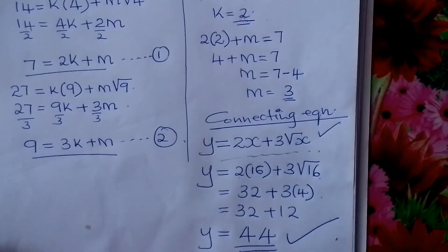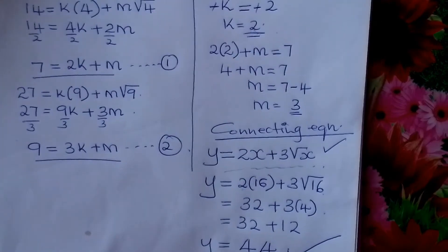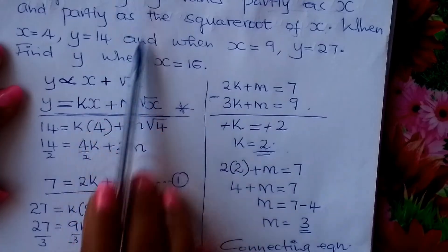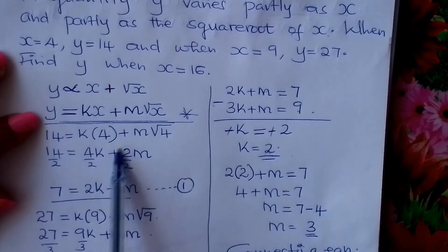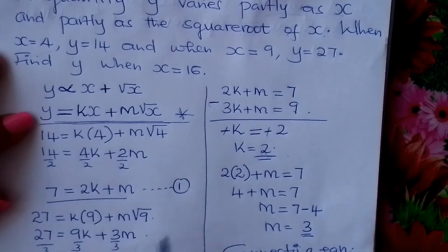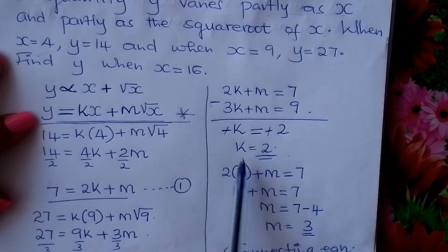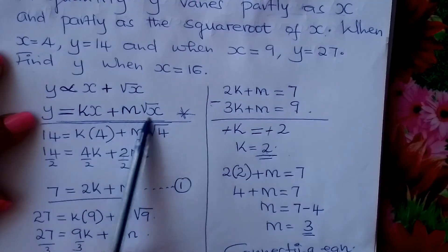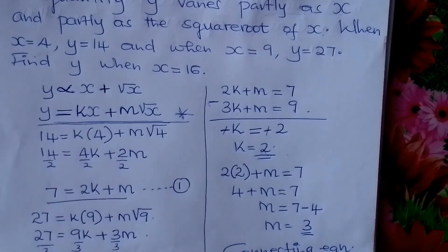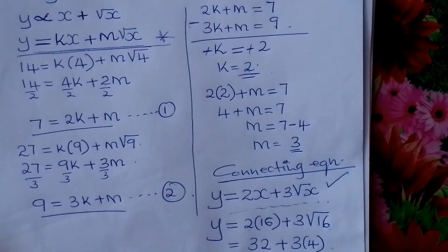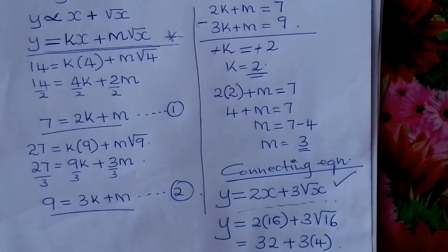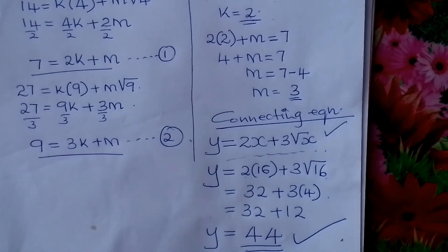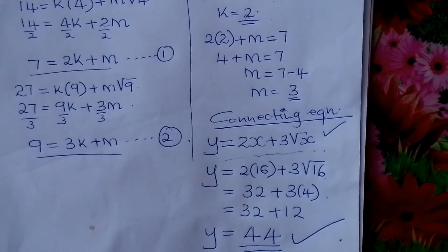Partial variation normally gives us two simultaneous equations that you solve to get your constants. After getting the constants, fix them into the equation to get the connecting equation, which helps you solve for any required value. Go and practice on partial variation. God bless you — continue practicing mathematics.